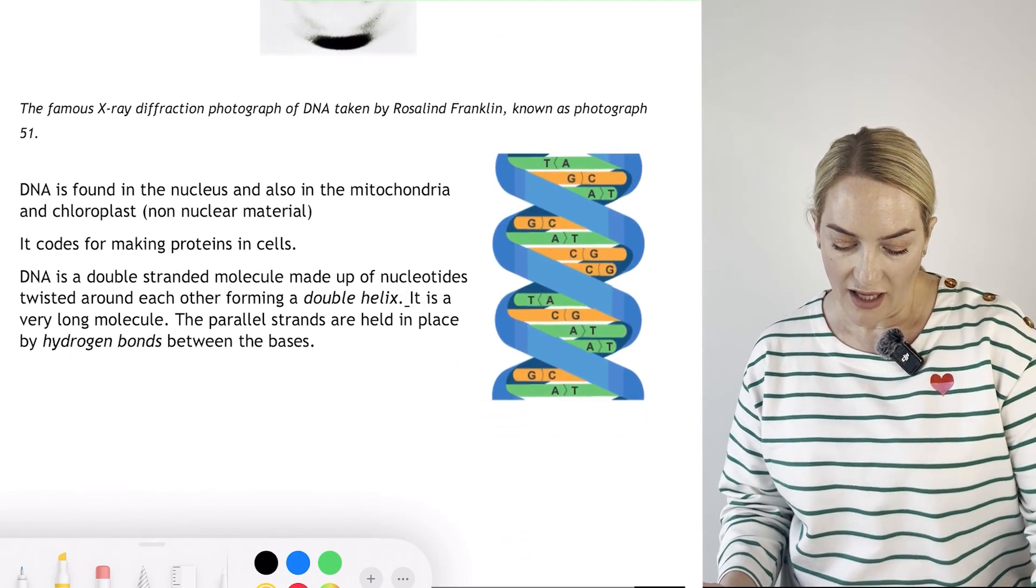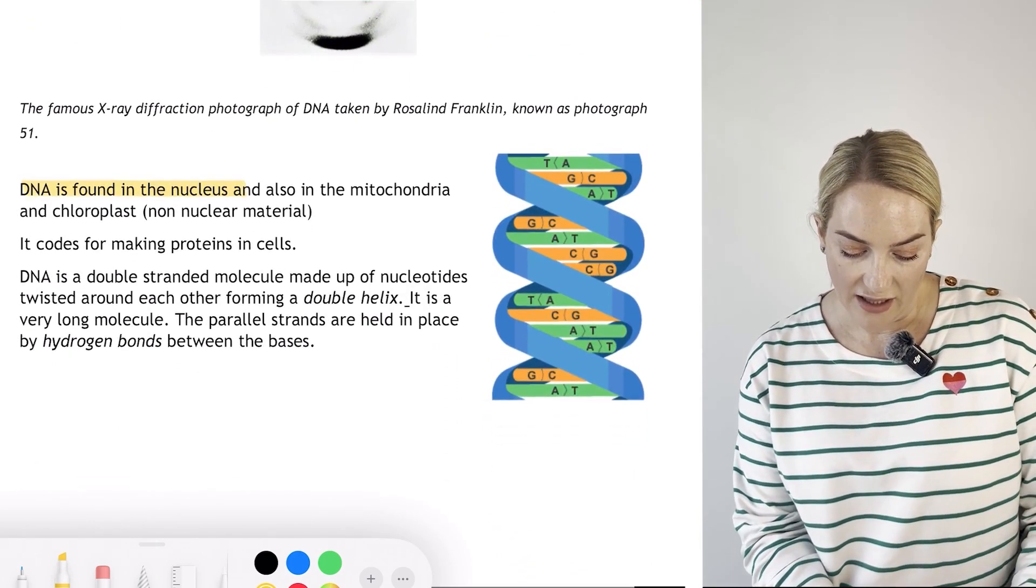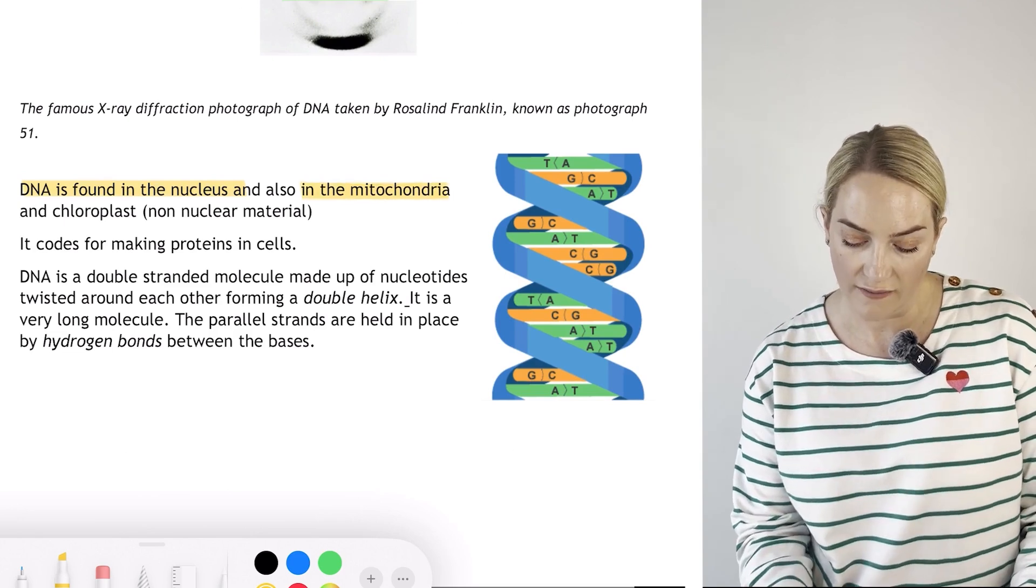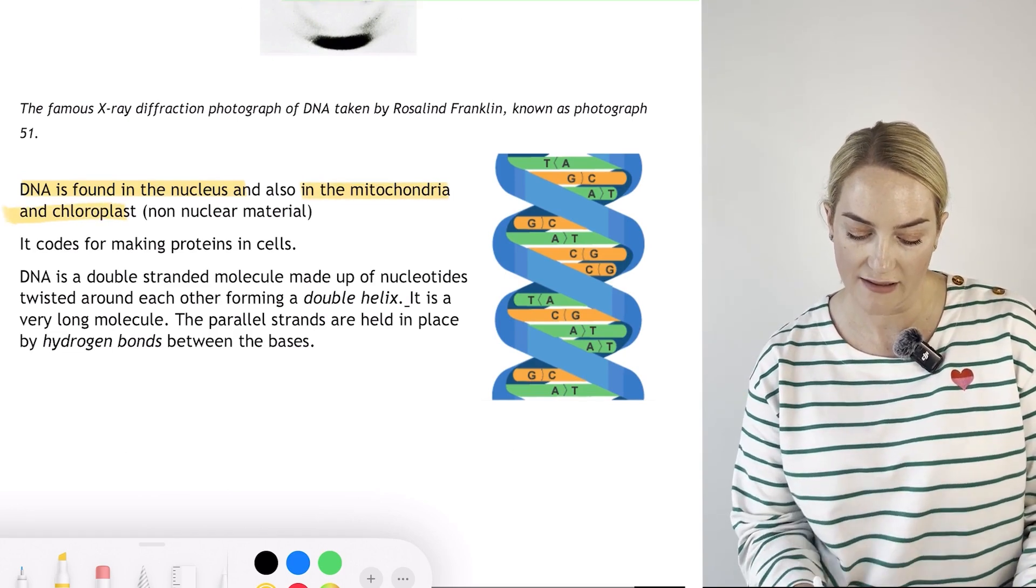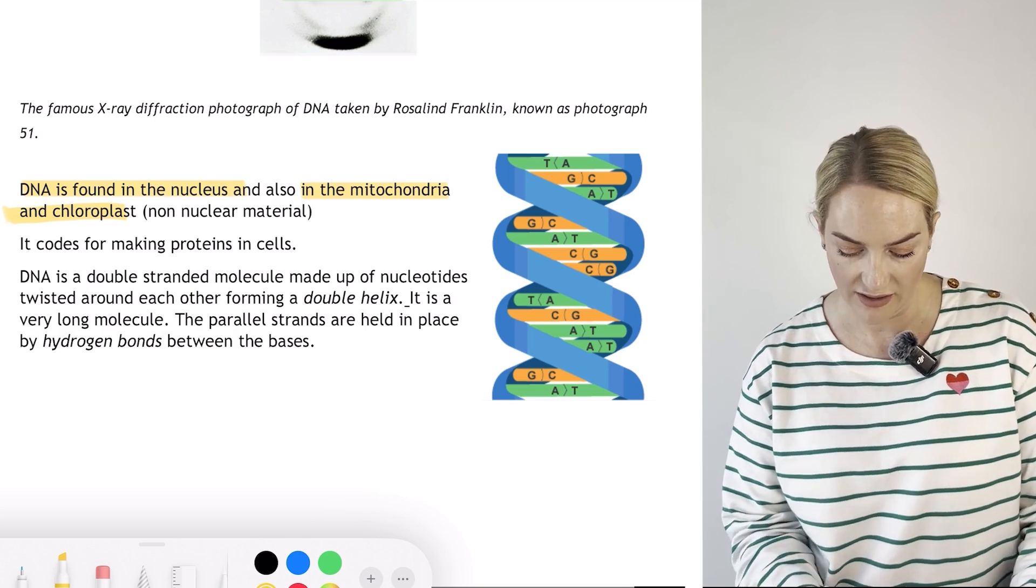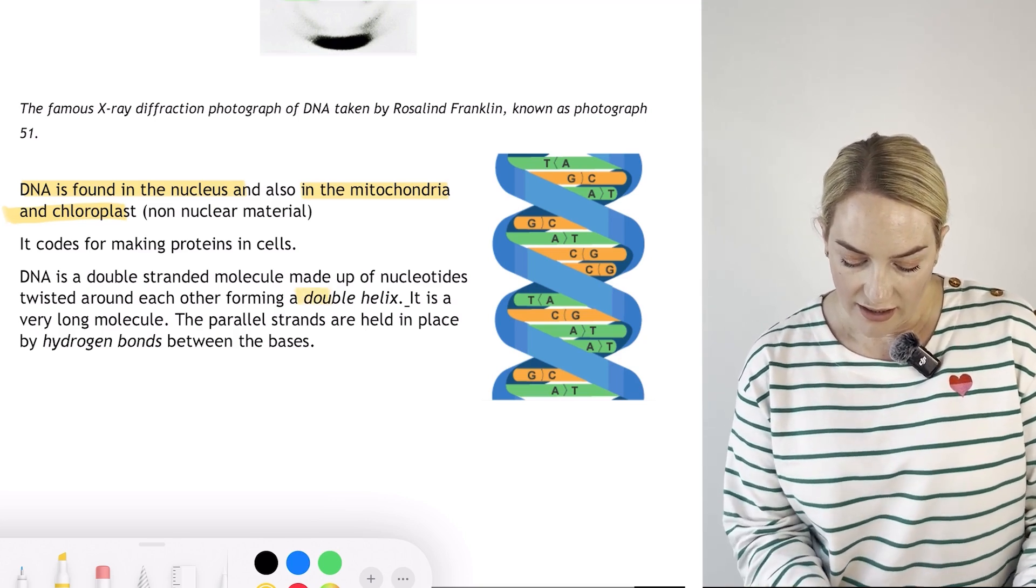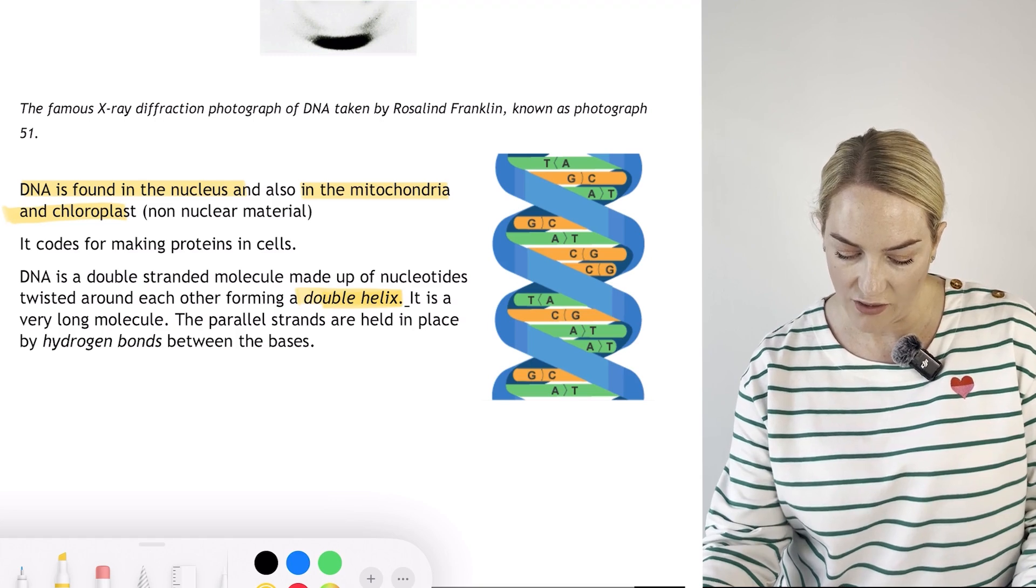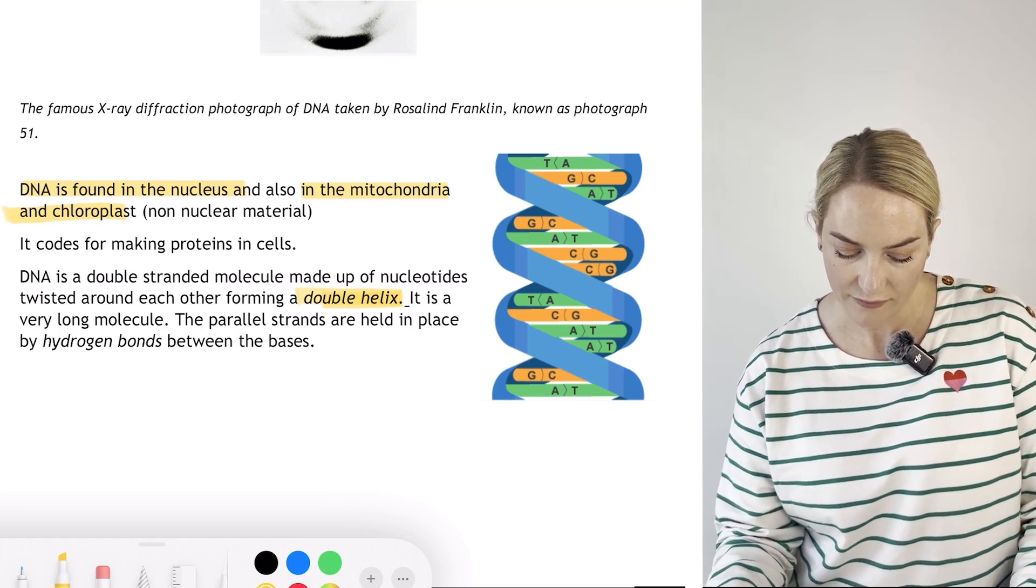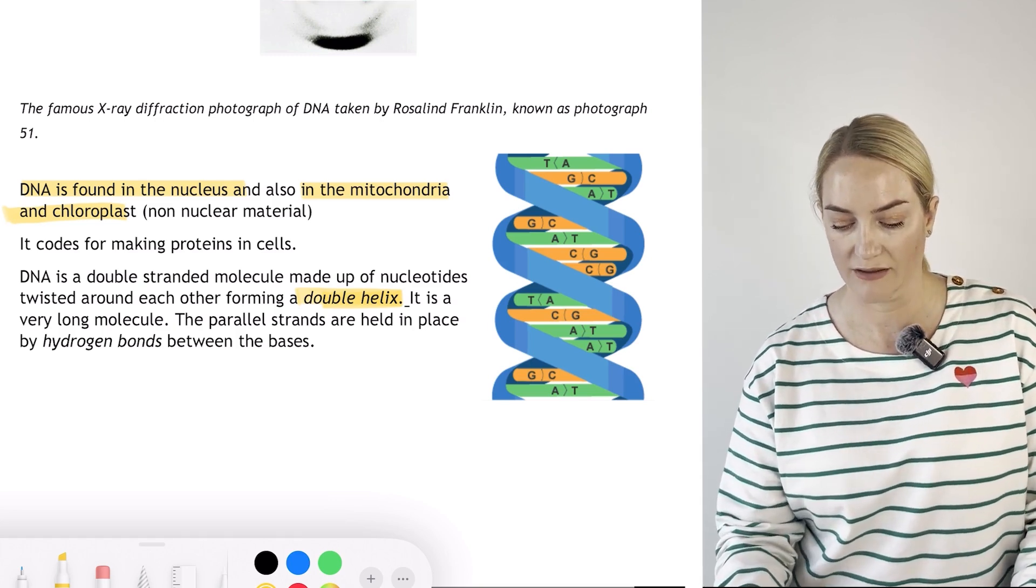DNA is found in the nucleus. It is also found in the mitochondria and chloroplasts. It codes for making proteins. The structure of DNA, which is here to the side, is known as your double helix. We have bonds here - T and A, C and G.